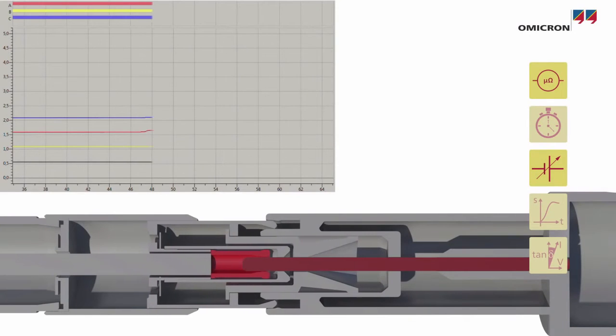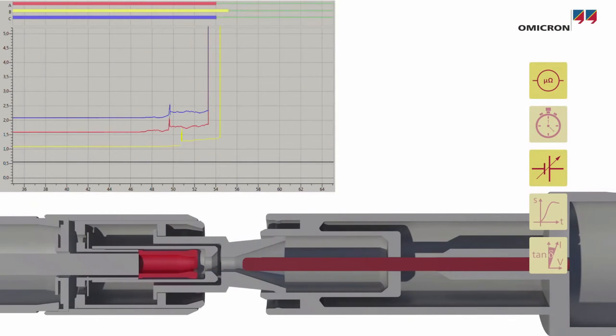If the breaker is equipped with a multiple contact system, measuring the dynamic resistance during opening and closing will indicate the wear of the arcing contact.